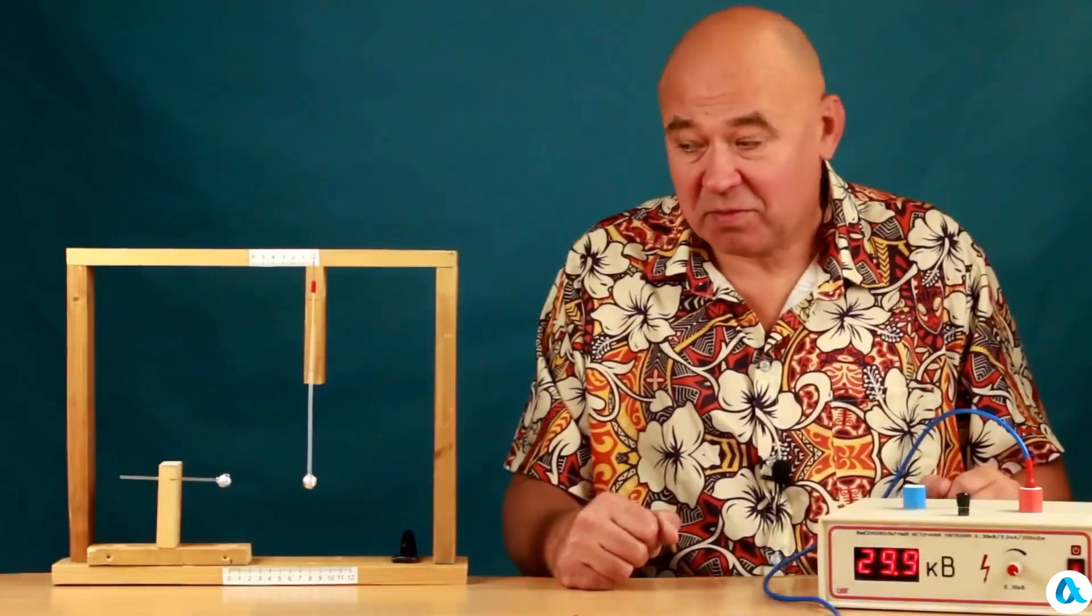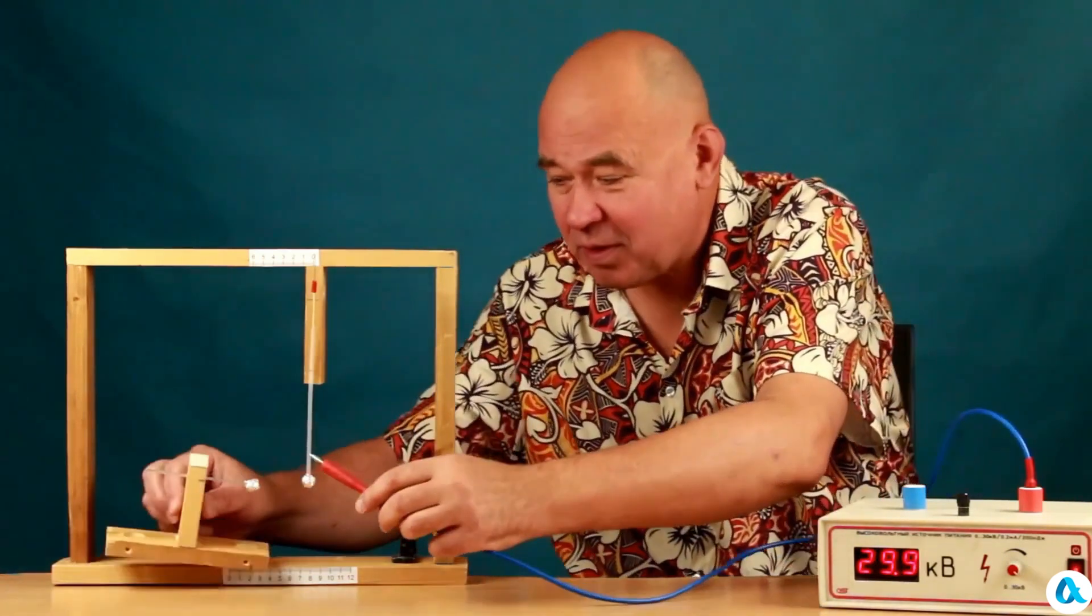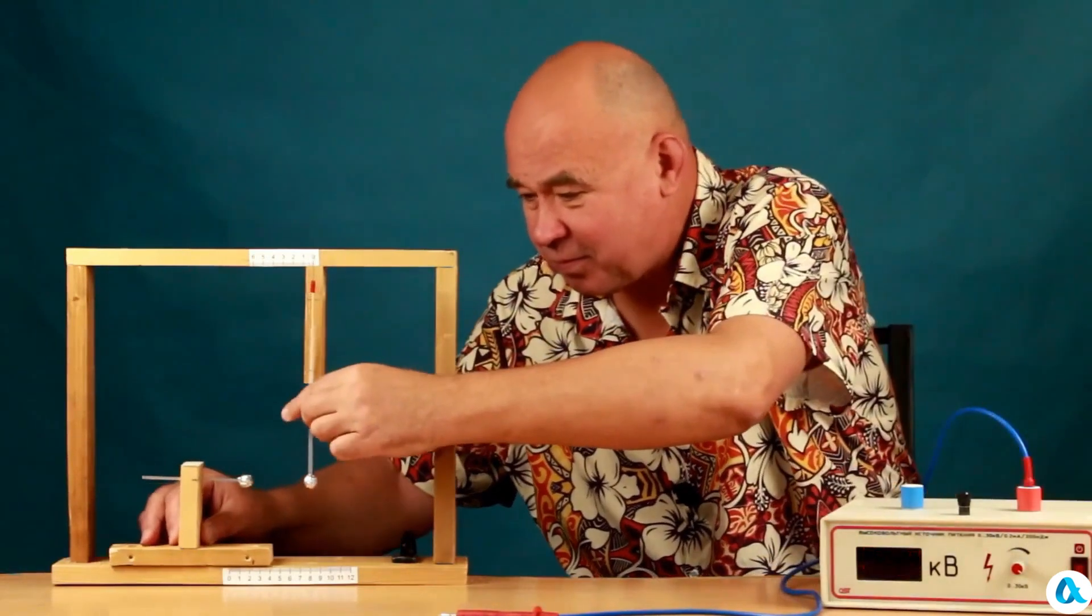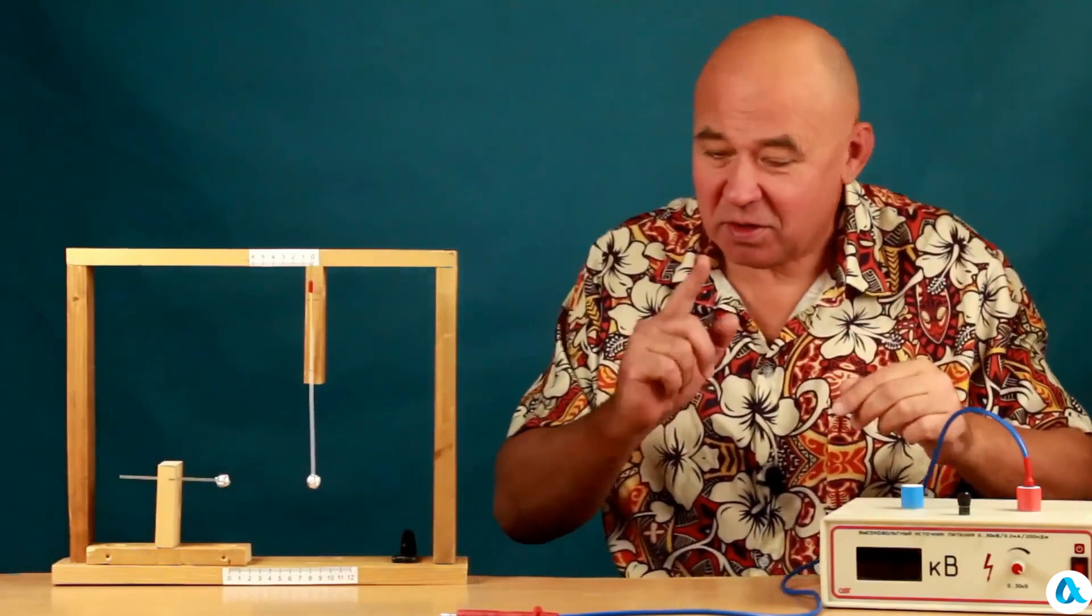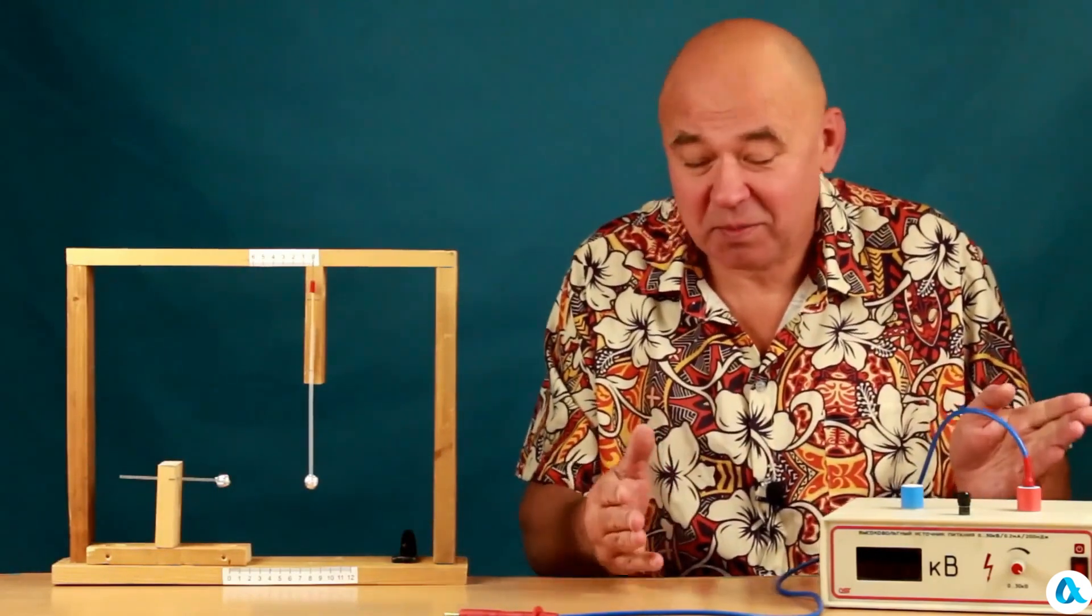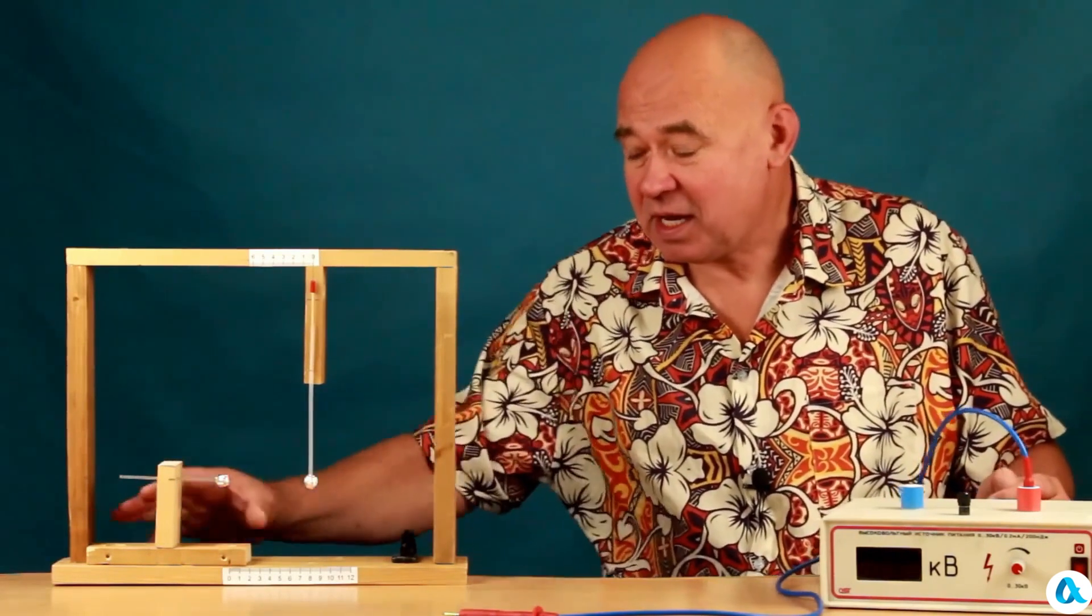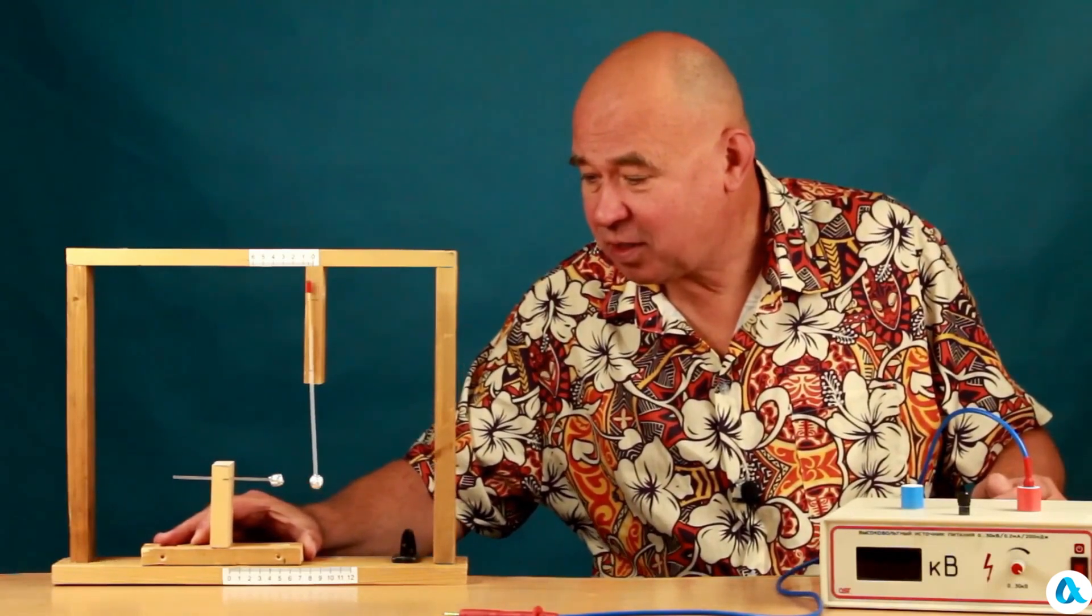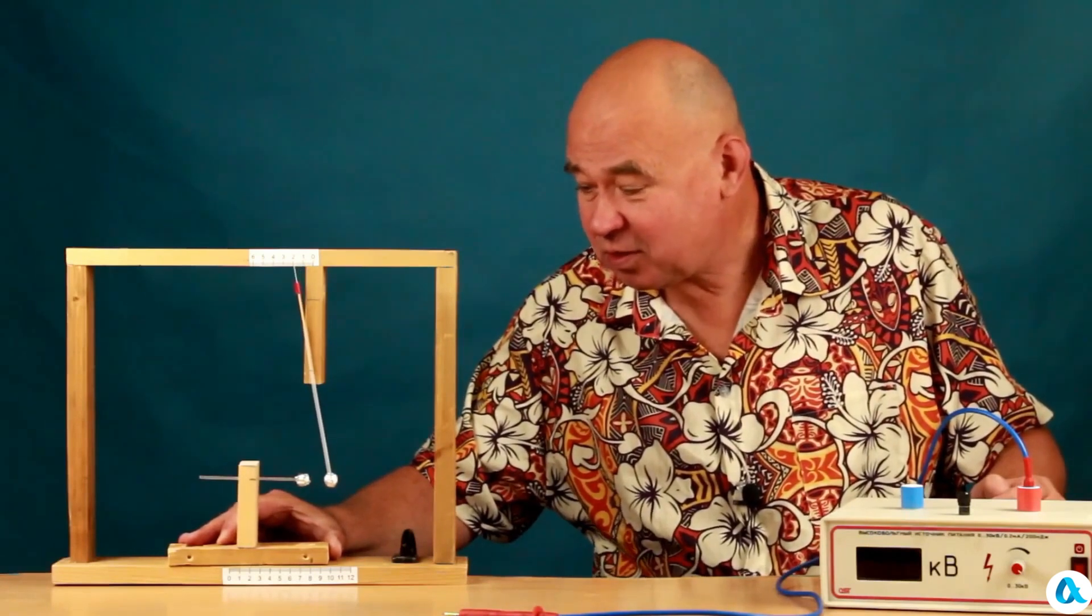The idea of the experiment is as follows. I will now charge not both spheres from 30 kilovolts but only one and I will touch the second sphere to the first one. Now the charge received by the first sphere is distributed between both spheres. Both spheres now have half of the charge. Well I will again bring the first sphere closer and observe how it deviates from the vertical under the weight of the second sphere.